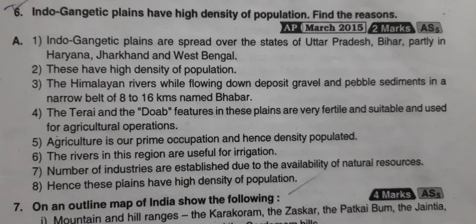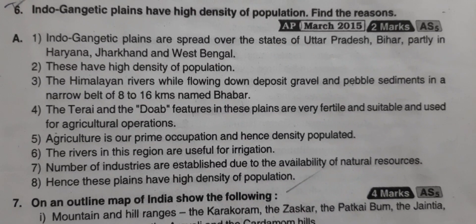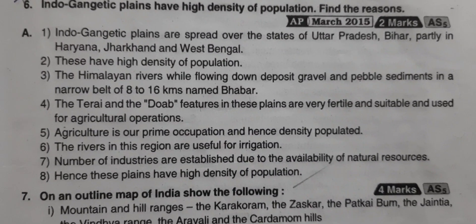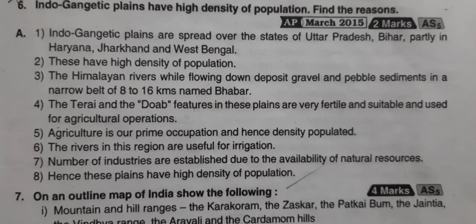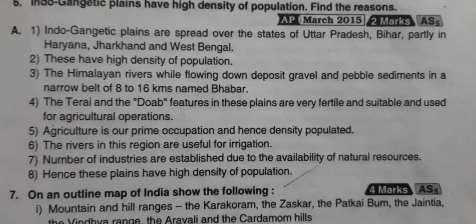The Indo-Gangetic plain is densely populated, spread over the states of Uttar Pradesh, Bihar, Haryana, Jharkhand, and West Bengal, which have high population density.